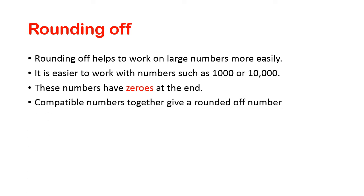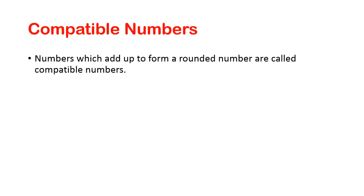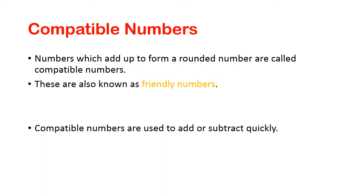Compatible numbers together give a rounded off number. What is meant by compatible numbers? Numbers which add up to form a rounded number are called compatible numbers. These are also known as friendly numbers.